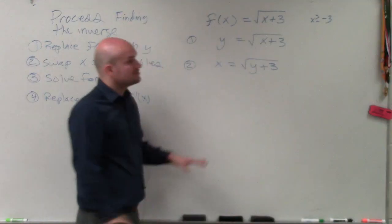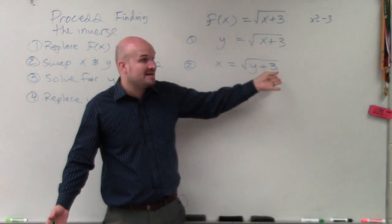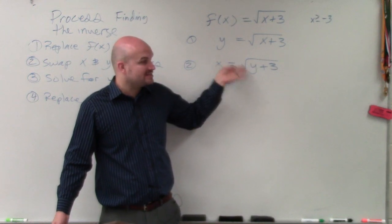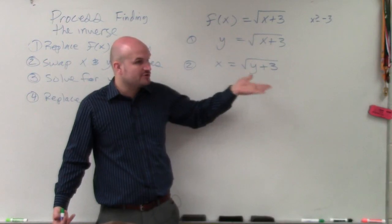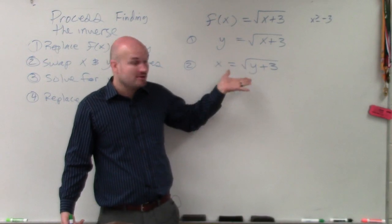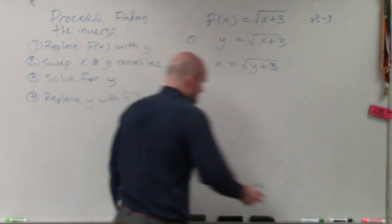But anyways, so now we've got to solve for y. Well, y is being added by 3, and it's under a square root. So following the order of operations, what do we need to undo first? Square root. So how do you undo taking the square root? You square. So you have to square both sides.